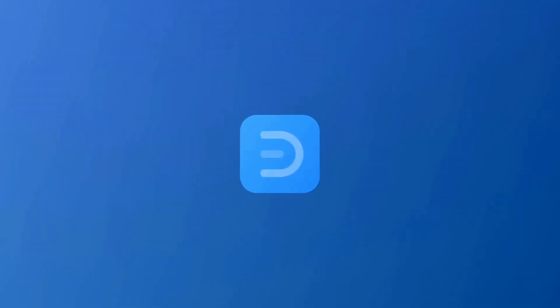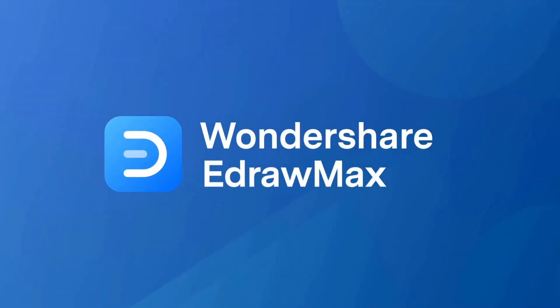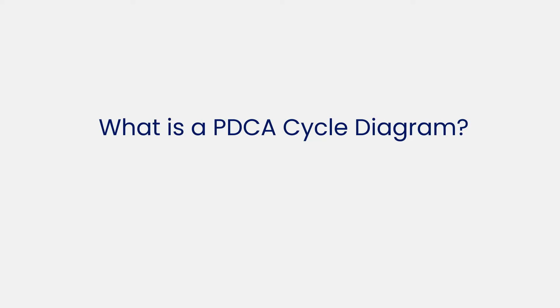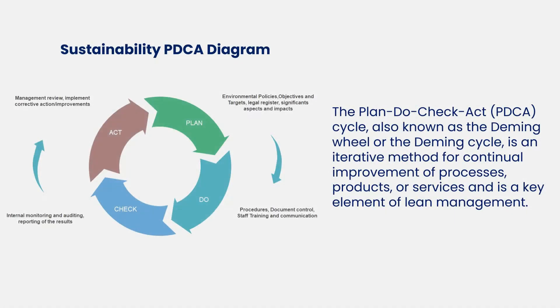Hello all, welcome to eDraw Max. Let's begin with understanding what a PDCA diagram is. The Plan, Do, Check, Act PDCA cycle, also known as the Deming Wheel or the Deming Cycle, is an iterative method for continual improvement of processes, products, or services, and is a key element of lean management.